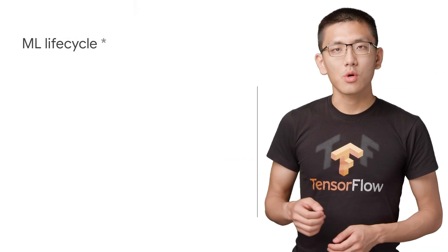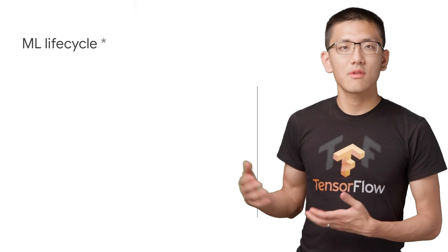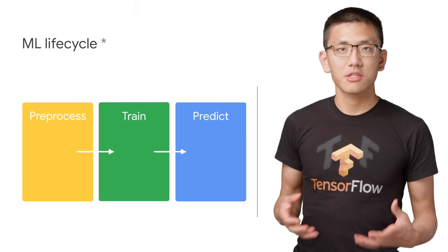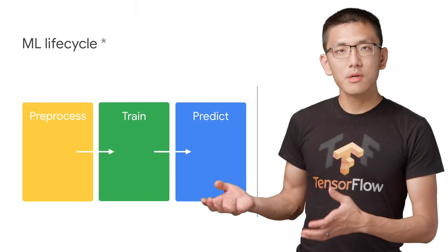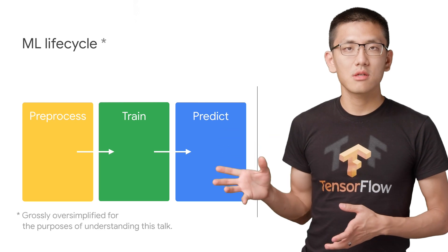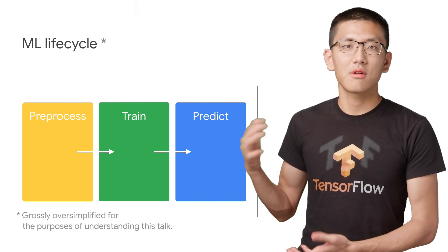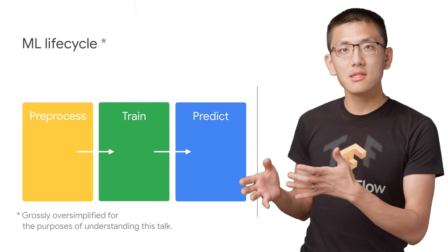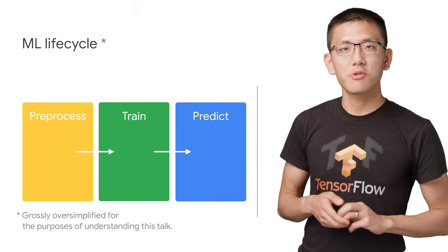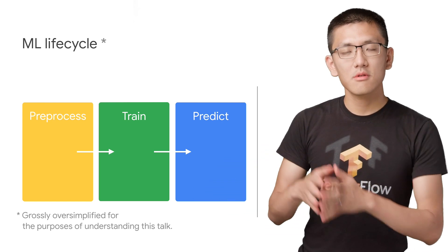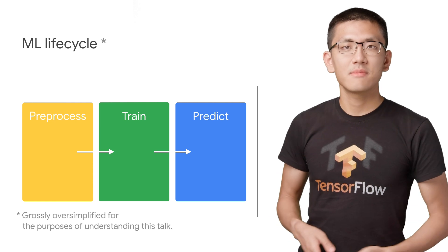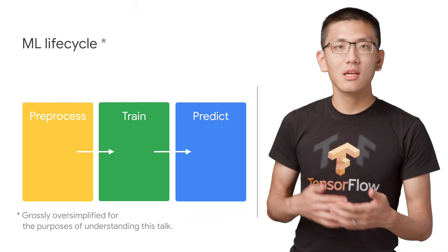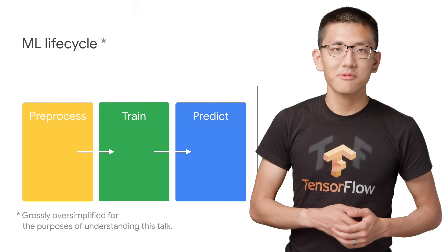We can view the machine learning workflow through the simplified lens of three stages: preprocessing, training, and prediction. Preprocessing is a stage of machine learning in which the raw data is made ready for modeling. This leads us to training, which is the process in which the model is tuned to predict a target variable from labeled input data. And finally, prediction is the process of predicting results for new unlabeled input.